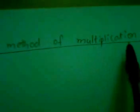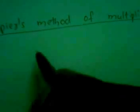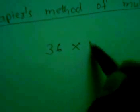Now I'm going to explain APS method of multiplication. Let us see 36 into 42.